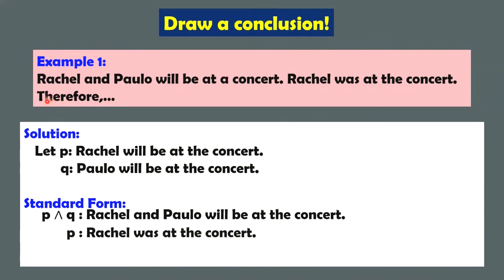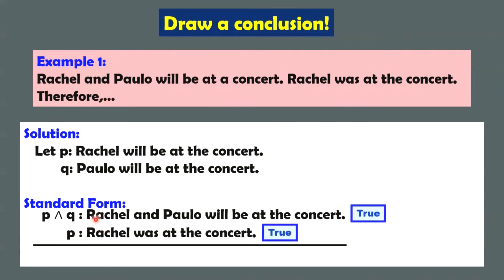We write that, and then we have 'therefore.' So what is the possible conclusion? You assume the premises are all true — both of them. Rachel was at the concert, this one is true. And P and Q is also true. Look at this: P and Q is true, and P is also true. So if P is true, what can you say about Q? Q must also be true, so that their combination using the word 'and' is also true. So the valid conclusion is Q — Paolo was at the concert.